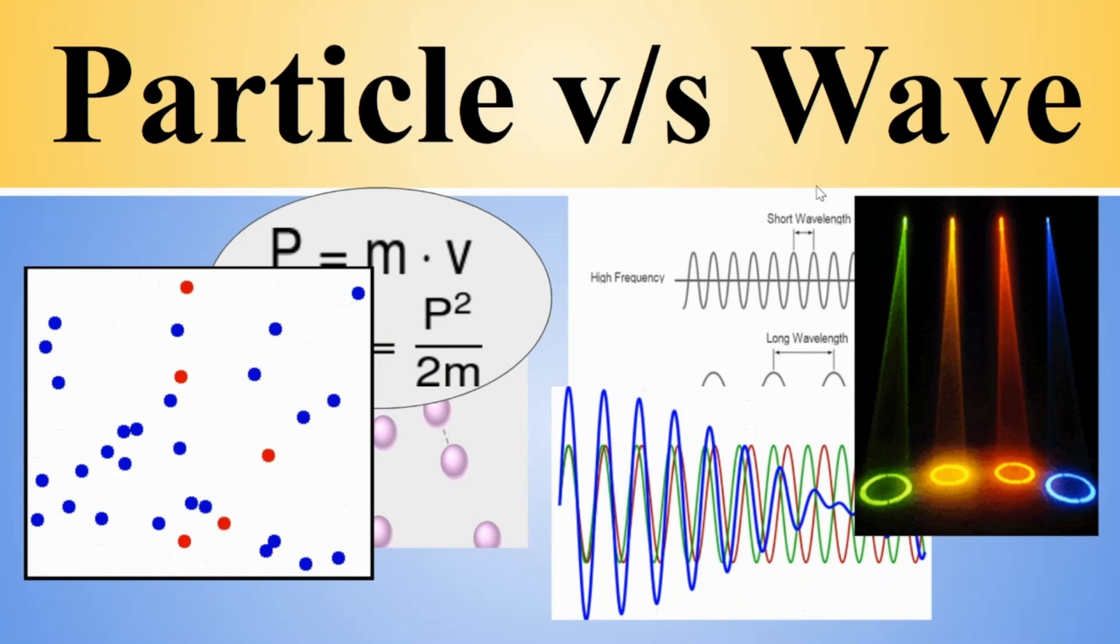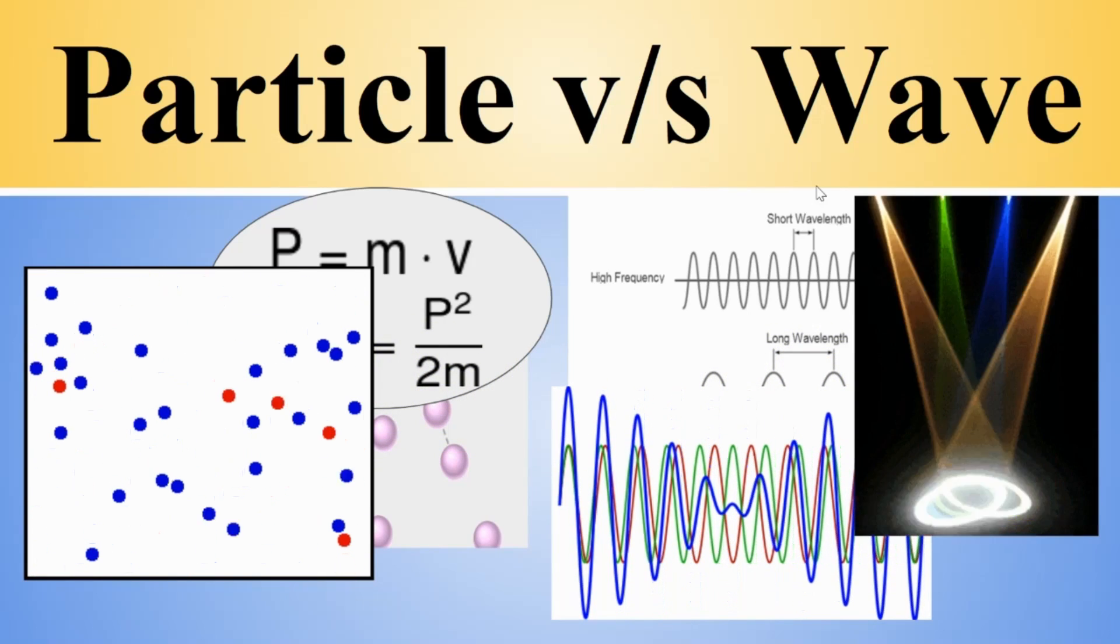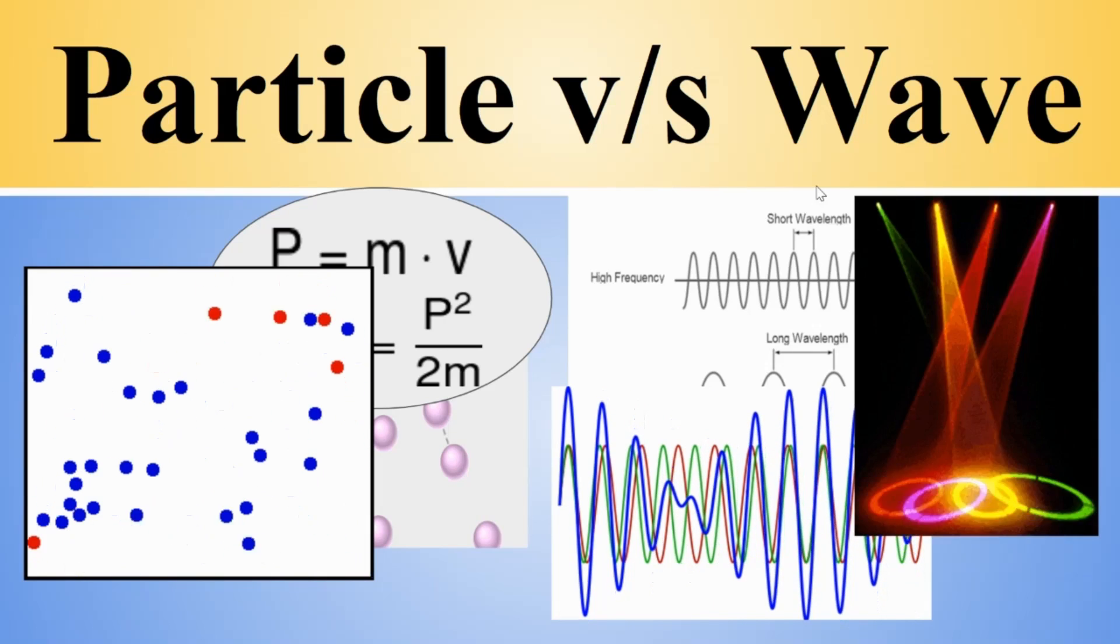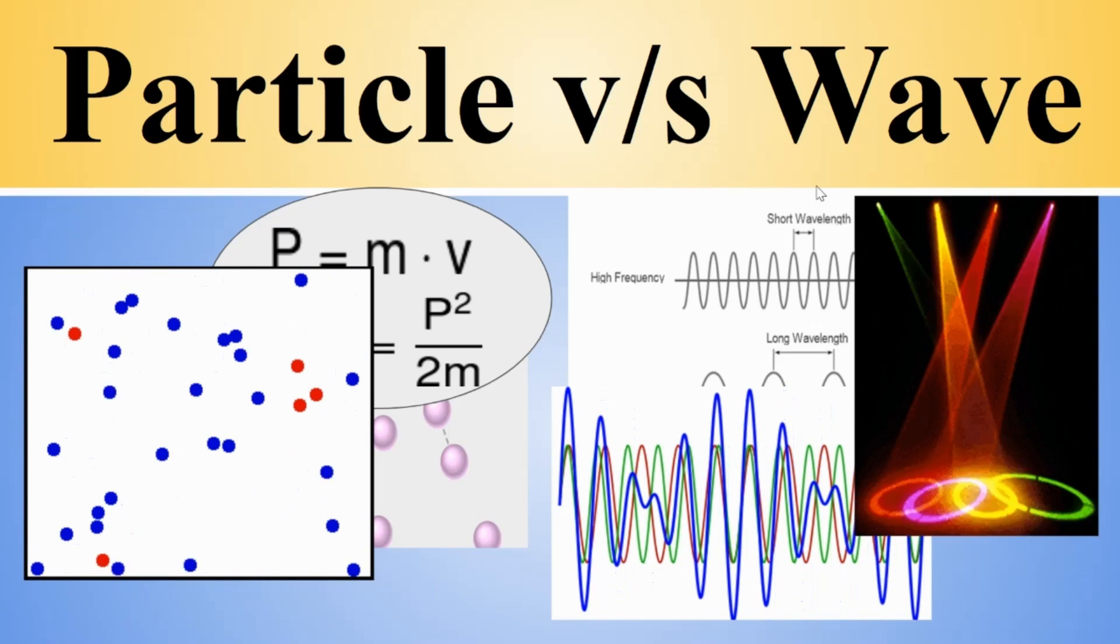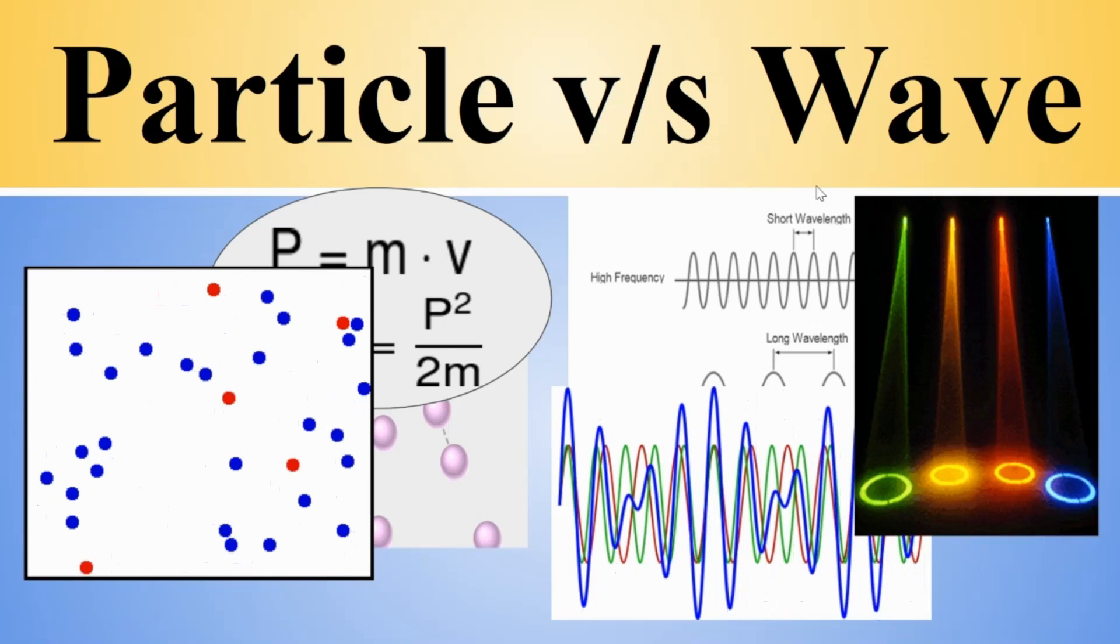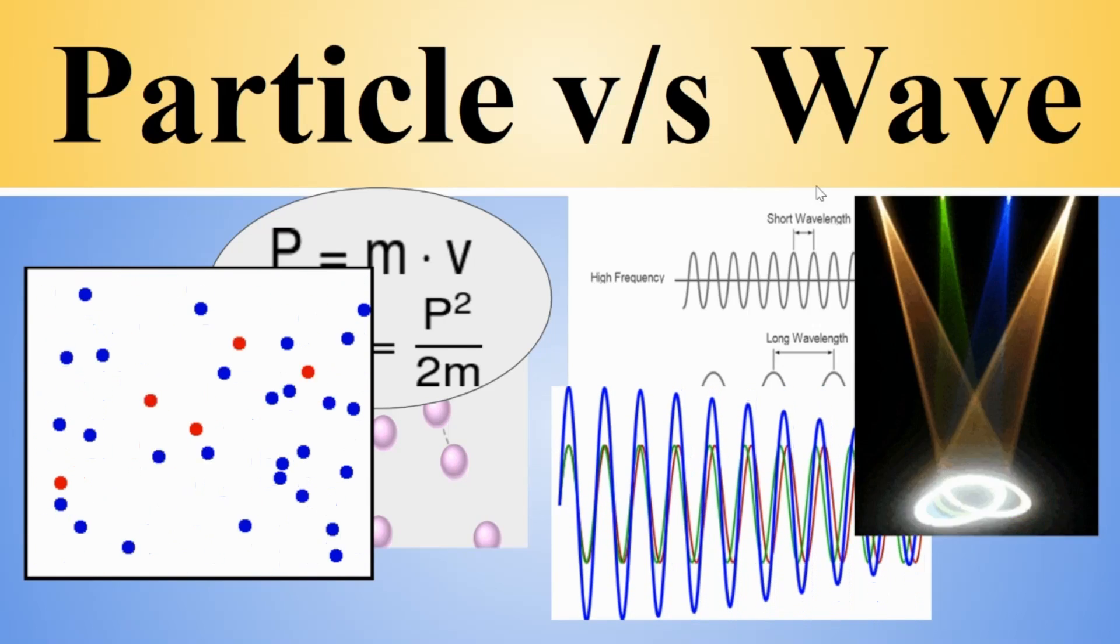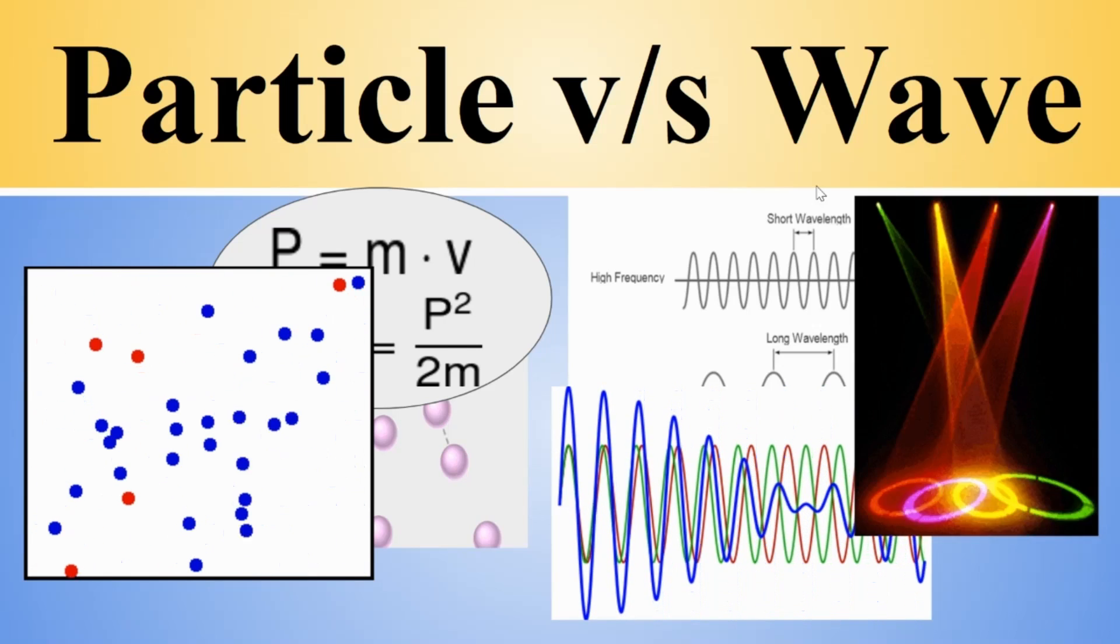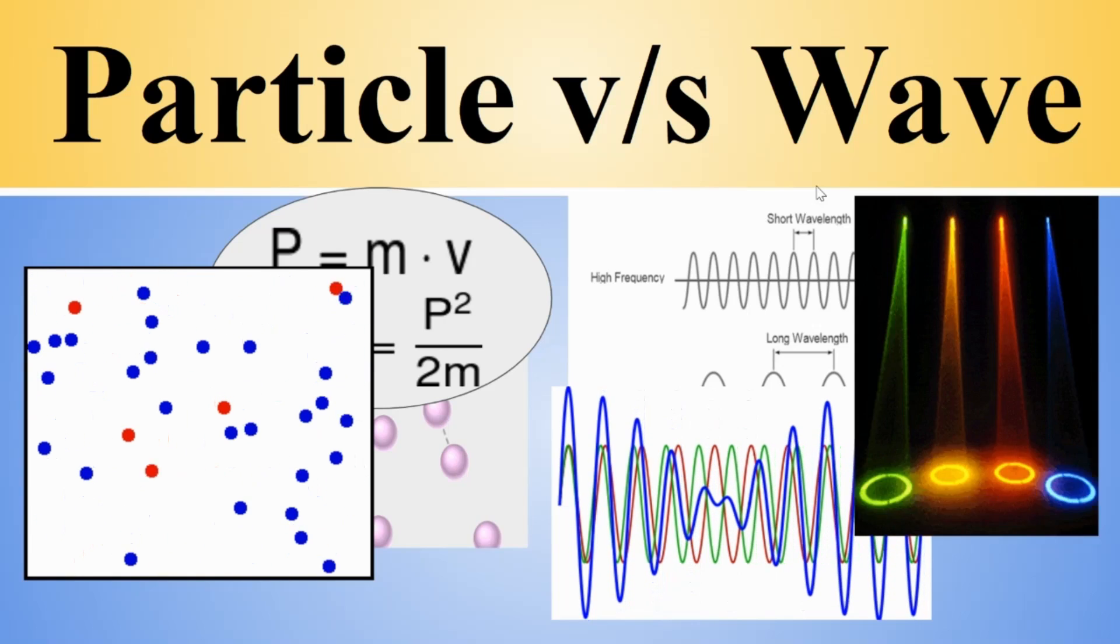Over centuries ago, it became very clear at that moment that light should be waves satisfying all these properties. However, then everything got changed. Let's see what leads to this change and then what is the new understanding of light. Is it a particle or is it a wave or something in between?